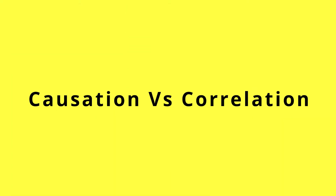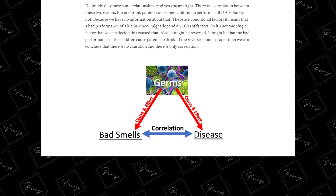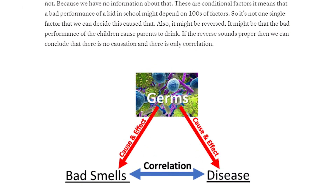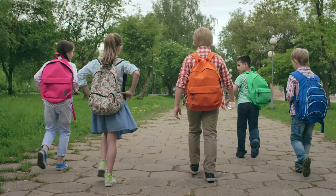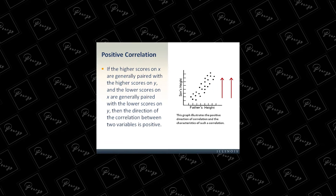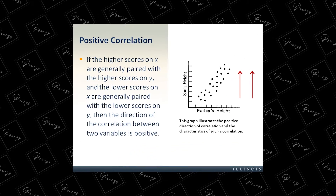Another trap we might fall into is confusing causation with correlation. We often mistake a correlation between two factors for a cause-and-effect relationship. For example, studies have shown a correlation between alcoholic parents and their kids' poor performance in school. But if you see that headline, you might think alcoholic parents actually cause lazy kids — and that's not true. This is only correlation, meaning these two factors have a positive relationship with each other, but it doesn't mean one causes the other.